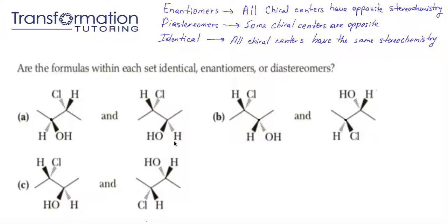Finally, if two molecules are identical, all of their chiral centers will have exactly the same stereochemistry. So, if I had two chiral centers S and S on one molecule, they will be the same configuration S and S on the other molecule as well. Now, in order to figure out what has opposite stereochemistry and what has the same stereochemistry, we have to assign each chiral center either an R or an S configuration.